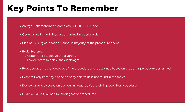Overall, what you need to remember: the ICD-10 PCS code is always 7 characters, nothing less. Code values in the tables are organized in serial order. The medical and surgical section makes up the biggest part of the procedure coding system. Upper body systems denote anything above the diaphragm; lower denotes anything below. Root operation is the objective of the procedure, and understanding root operations is very important. The body part key can be used when you don't find a body part value. You also have a device key and device aggregation table to identify device types. The qualifier value X is used for all diagnostic procedures.